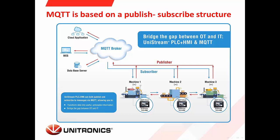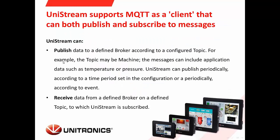And vice versa — the machines can also subscribe to specific topics in the MQTT broker. Once the MES or cloud applications send data for those relevant topics, the MQTT broker will send this data to the machines. Unistream is a client and it can perform as a publisher, publishing data to a specified broker, and also as a subscriber, receiving data from defined brokers on predefined topics.